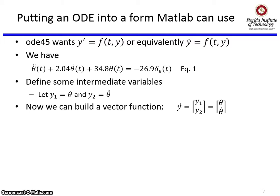We can take the derivative of a vector function. It's just the derivative of the individual elements: ẏ₁, ẏ₂, which is θ̇ and θ̈.